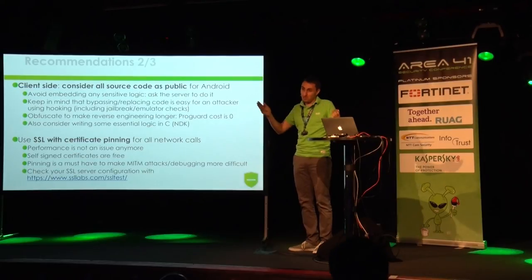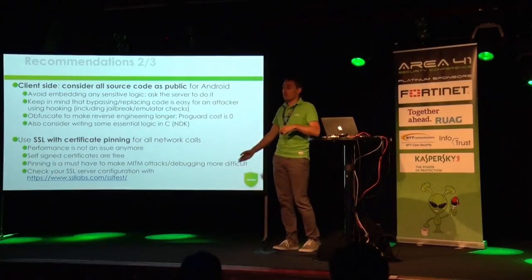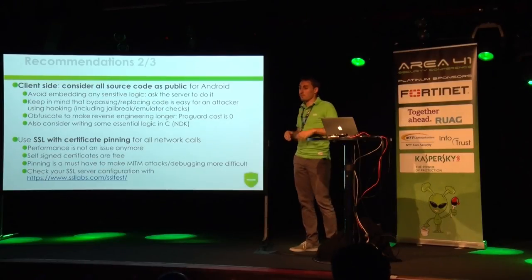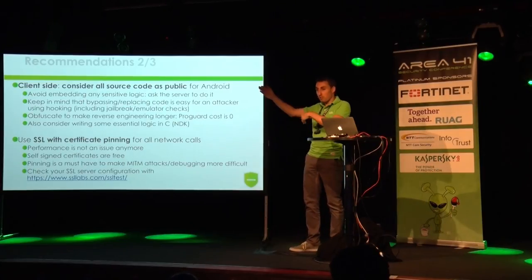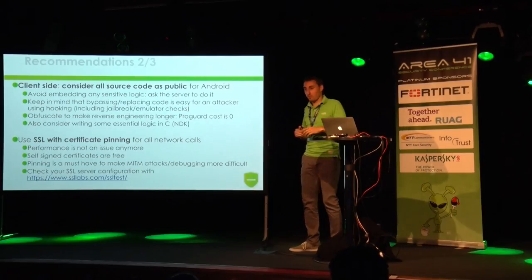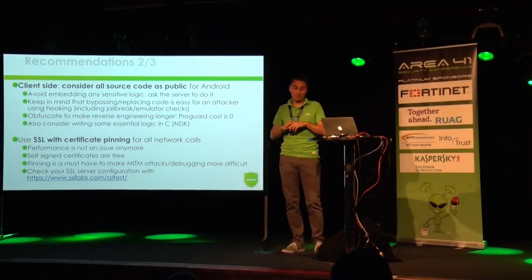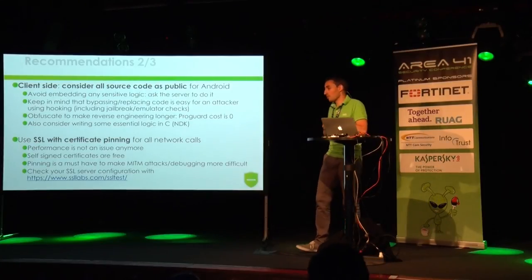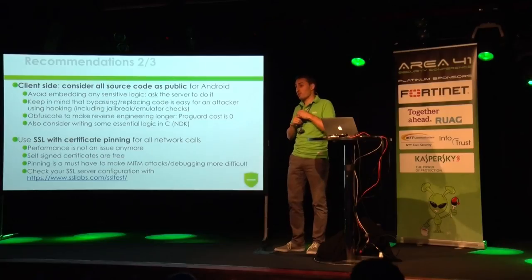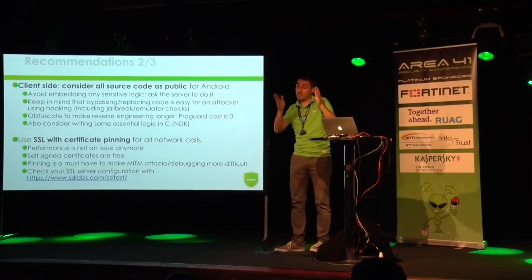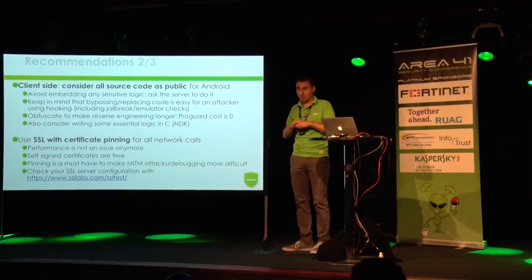The two most important recommendations: do a good job server-side. Even in a mobile context, your security lives there. For the past 20 years we've learned to secure backends and web apps — do your authentication and access control properly and test it. On the client side, for Android, treat any source code you put in it as public — like JavaScript in a web app. You can use obfuscation: ProGuard is free, takes 10 seconds to configure, and will rename methods to A, B, C, making security analysts lose time. But it's not bulletproof. You can also use the NDK for native C code — it raises the bar because you're dealing with ARM binary — but it's still just a matter of time.